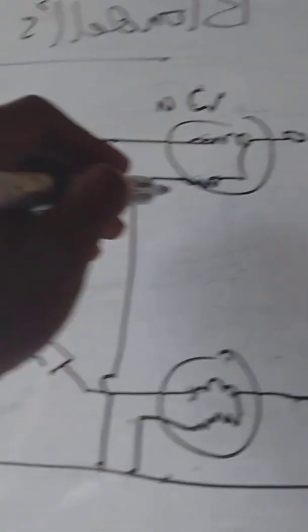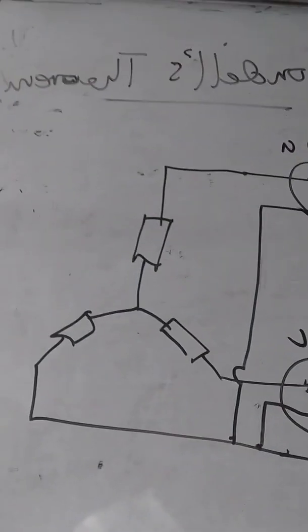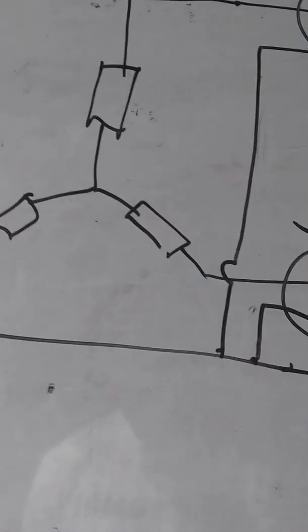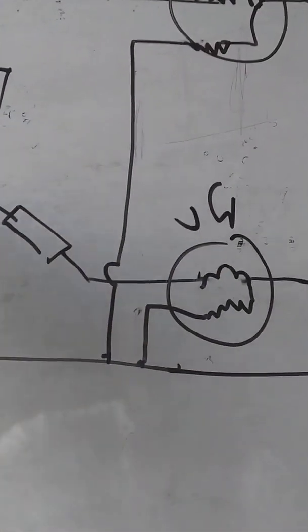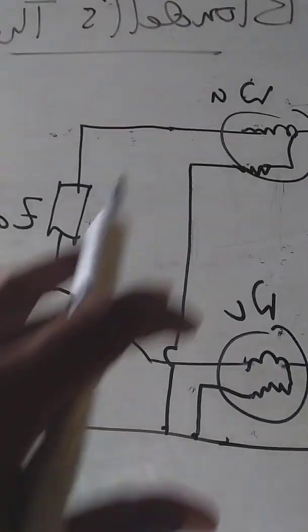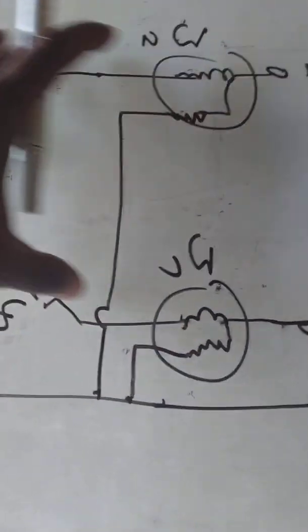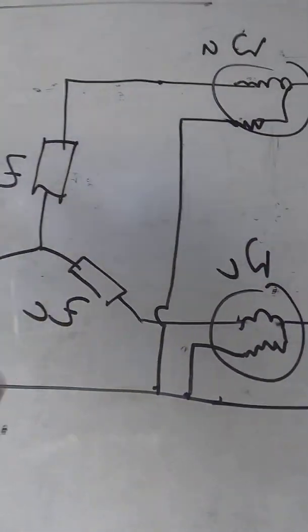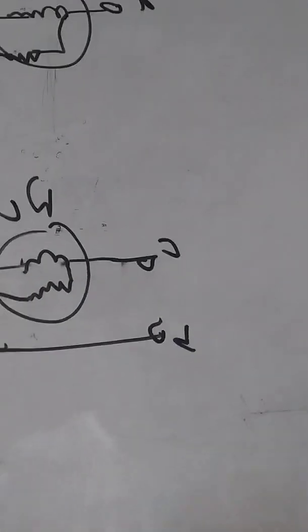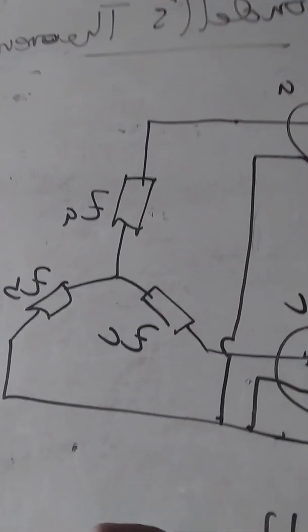This is wattmeter A and this is wattmeter C. What we want to prove is that the total power measured from these two lines equals the total power consumed by the load. Let the total power readings be W_A and W_C.